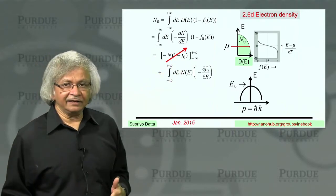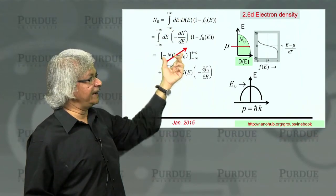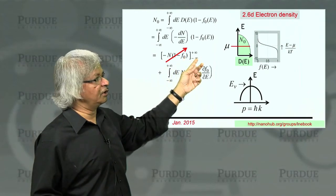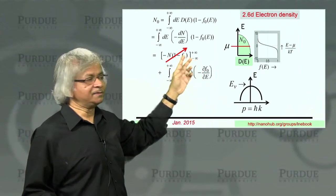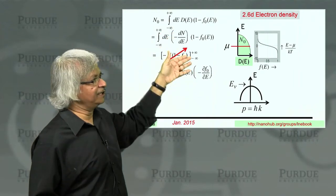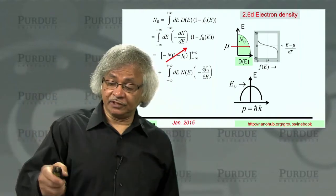On the other hand, if I had started with F0 instead of 1 minus F0, then I would have got NF0 over here. And NF0 would not be zero at one of the limits, which means I wouldn't be able to ignore this term. So whatever I did here only works if I use 1 minus F0. It doesn't work if you use F0.